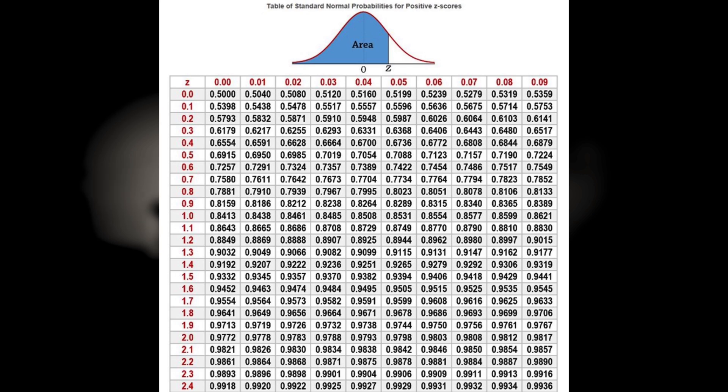So on the left side here you have the digit in the ones place, and from left to right at the top you have the digit in the second place. That is your z-score, and then the numbers on the inside of the table are the area to the left of each of those z-scores. So what does that mean?